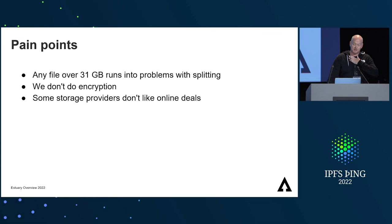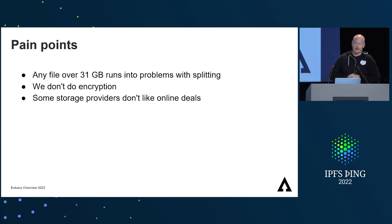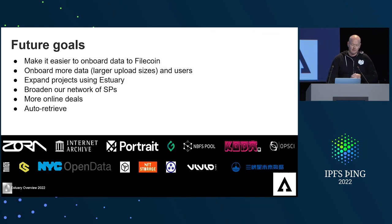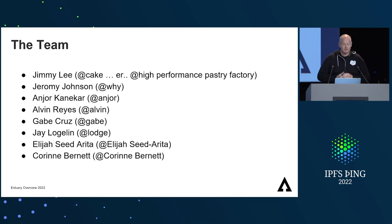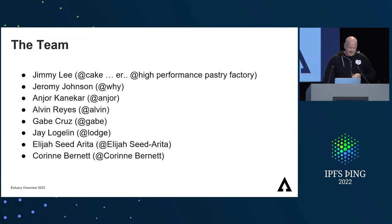Looking at the future of Estuary: some pain points — any file over 31 gigs runs into problems with splitting, we don't do encryption yet but it's coming, and some storage providers have mentioned they don't like dealing with online deals. Future goals include making it easier to onboard data into Filecoin, onboarding more data, expanding projects using Estuary, broadening our network, and most importantly in the short term, getting auto-retrieve up and running. And that's the team.